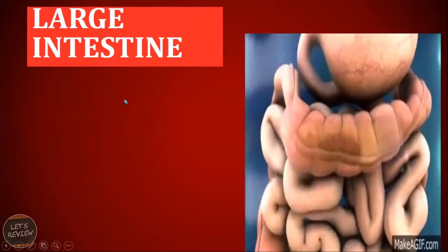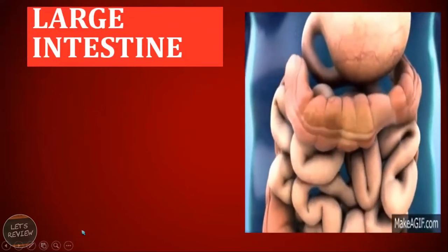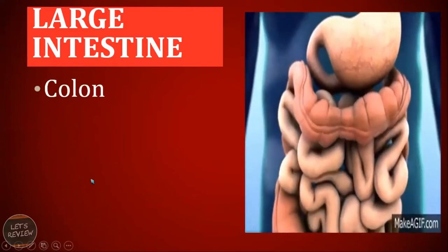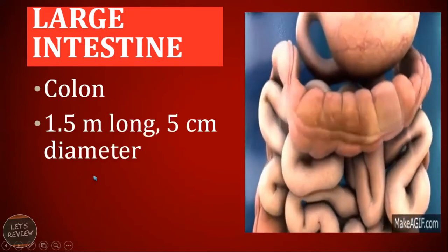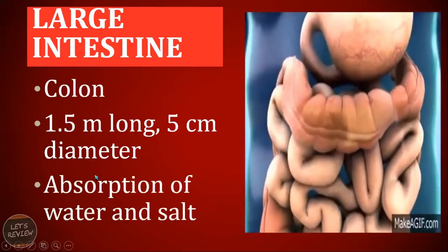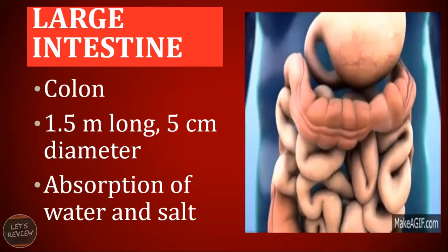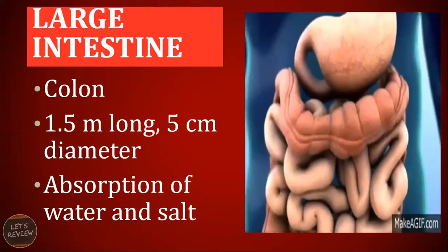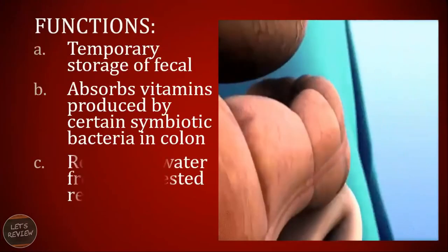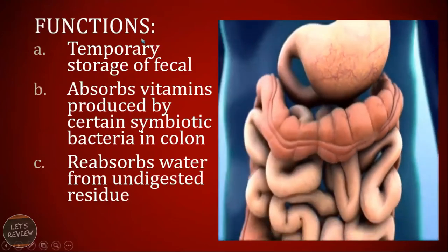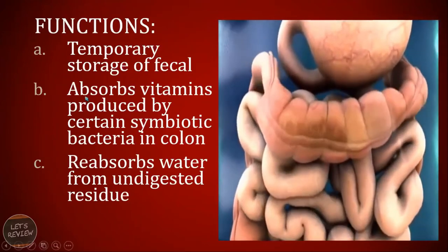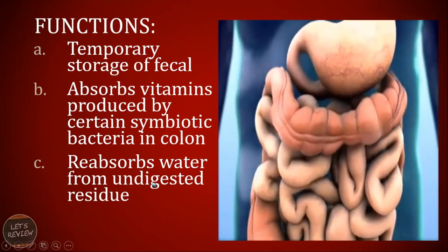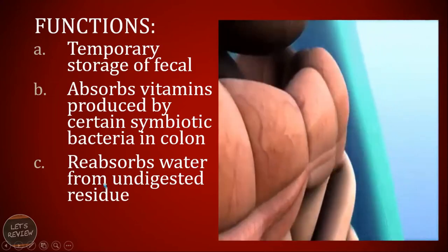Connected to the small intestine is the large intestine, also known as the colon. It is 1.5 meters long and 5 centimeters in diameter. Water and salt are absorbed here, which is why your fecal material becomes solid. Its main functions are: first, temporary storage of fecal material; second, it absorbs vitamins produced by certain symbiotic bacteria in the colon; and third, it reabsorbs water from undigested residues.